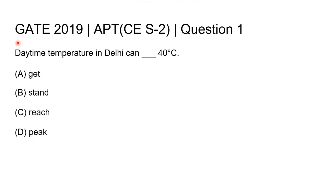Hello everyone. This question is from GATE 2019 Civil Engineering Set 2, question number 1. The sentence is: 'Daytime temperature in Delhi can blank 40 degrees Celsius.' We have to fill in the blank with the right option from the four given options.